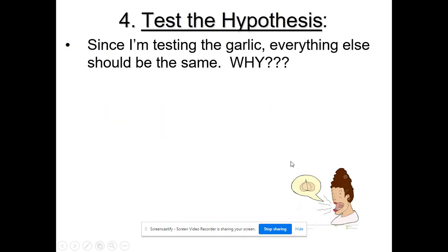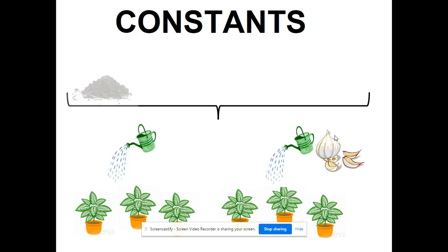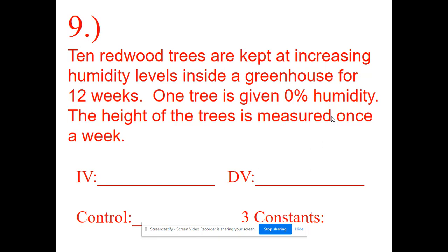The one thing we want to change is the garlic juice; everything else we keep constant. Constants would include the same soil, the same amount of sunlight, the same amount of water, the same type of plant, and the same temperature. For another example: ten redwood trees are kept at increasing humidity levels in a greenhouse for 12 weeks, with one plant at 0% humidity, and height is measured weekly. The independent variable is humidity level; the dependent variable is the height of the trees.